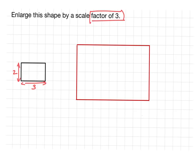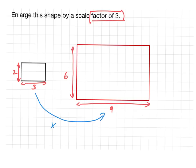So here I've enlarged the shape. As you can see, the base here is 9 boxes across and the height here is 6 boxes across. I've multiplied the base of the original shape by the scale factor of 3, so the multiplier there is 3. And I multiplied the height by the scale factor of 3 — 2 times 3 became 6 — so the multiplier there was clearly 3. And that's how you enlarge a shape.